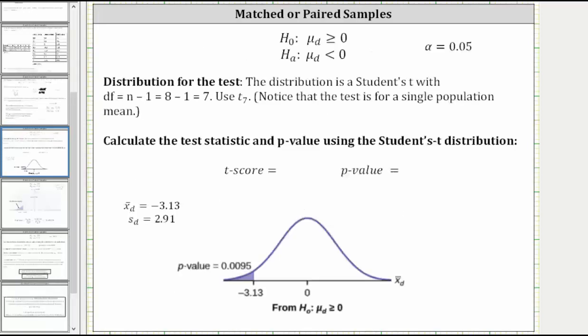And again, the distribution is a Student's t-distribution with n minus 1, or in this case, 7 degrees of freedom.